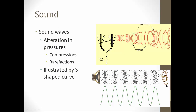Sound waves are actually alterations in pressure. If you hit a tuning fork, it vibrates back and forth — every time it vibrates one direction, it compresses the air on that side; when it vibrates away, the air pressure lowers in that spot, which is called rarefaction. So sound waves are composed of alternating compressions and rarefactions, or high and low pressures. The peak of the sound wave represents compression; the bottom represents rarefaction.